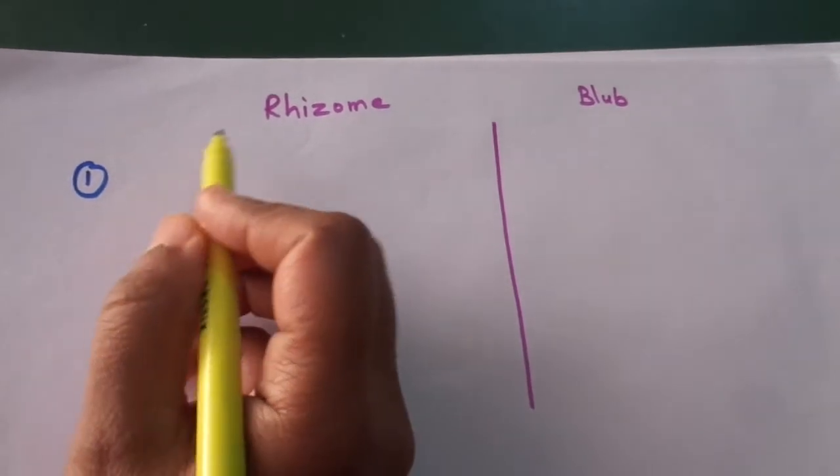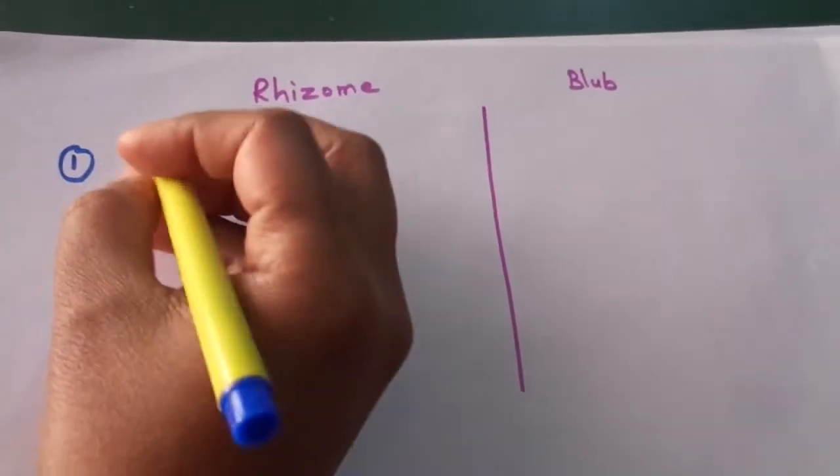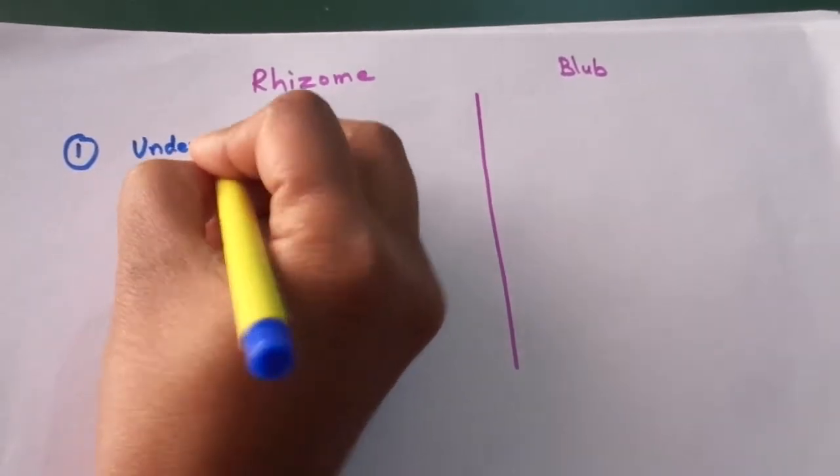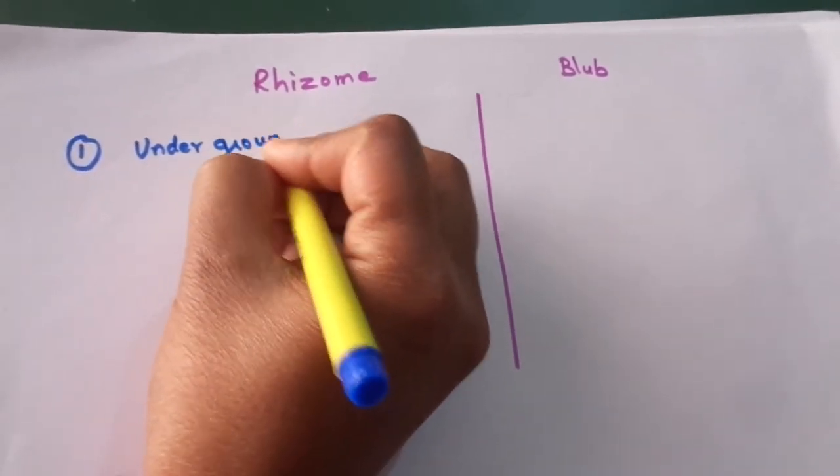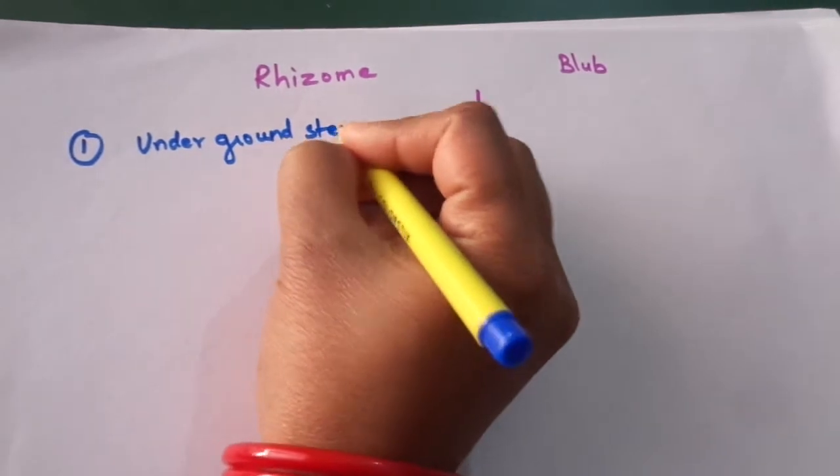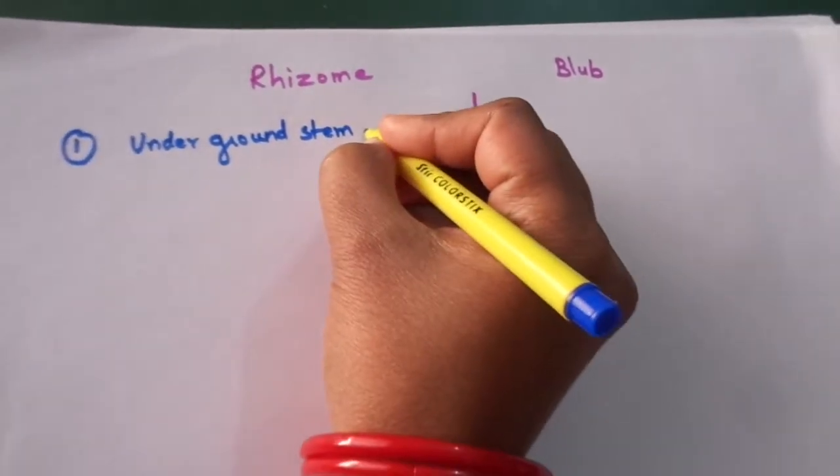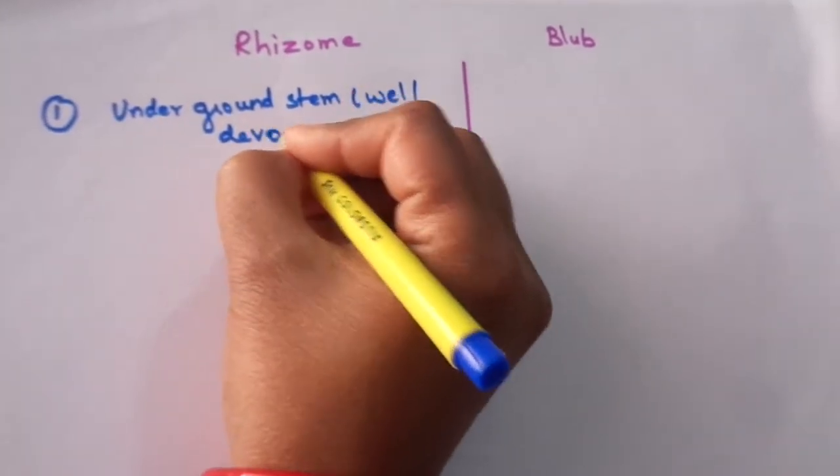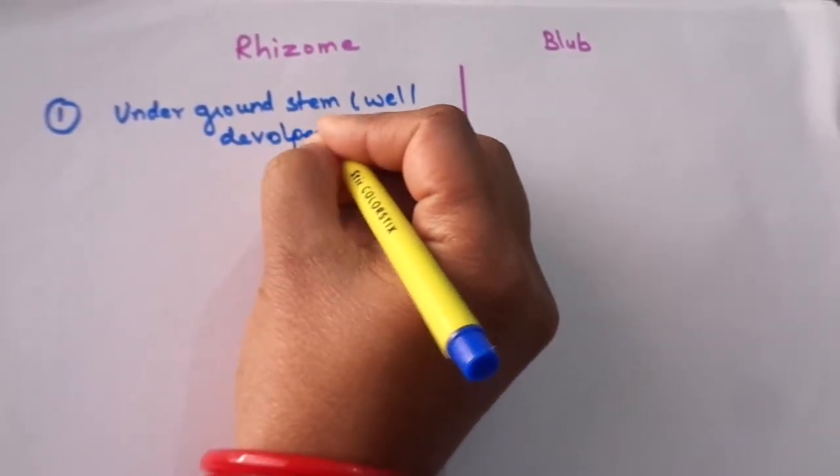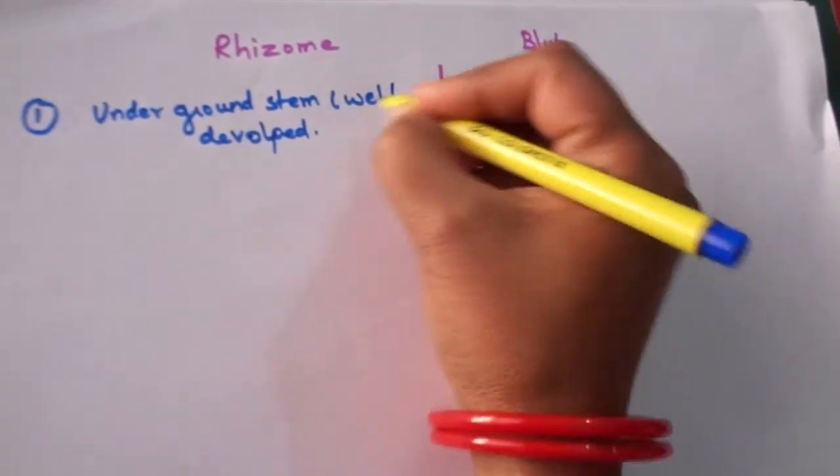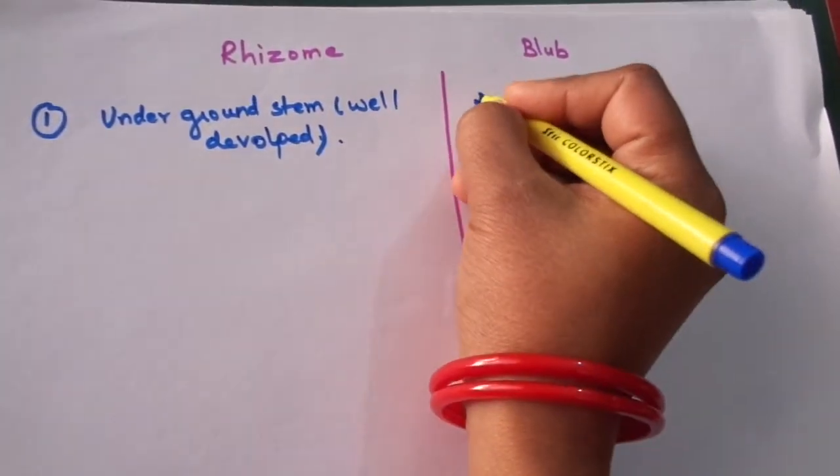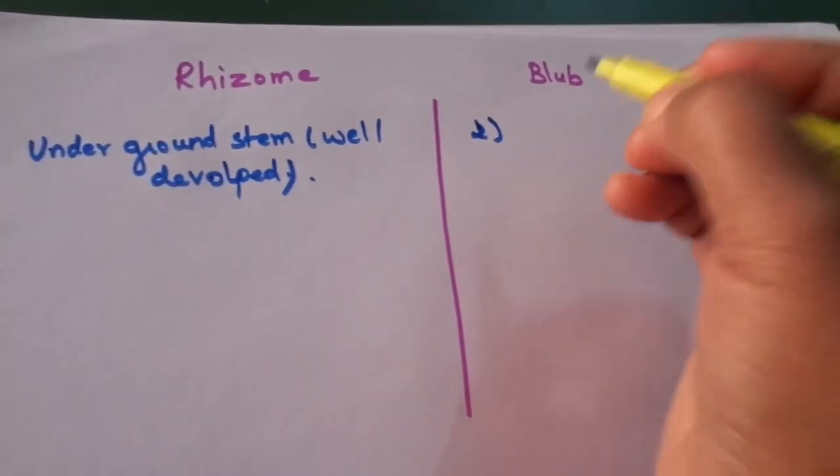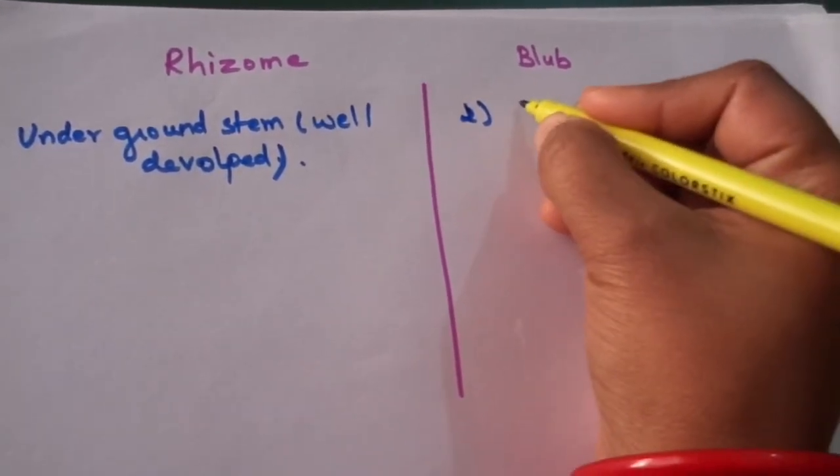The first difference is the rhizome - it is an underground stem which is well developed. However, the bulb, the stem is reduced to form a disc.